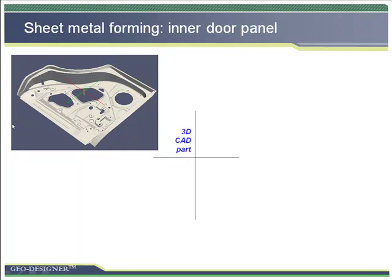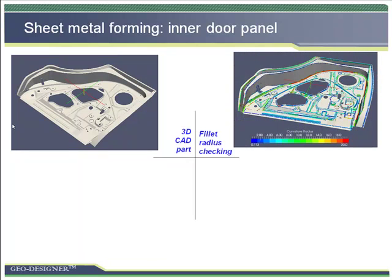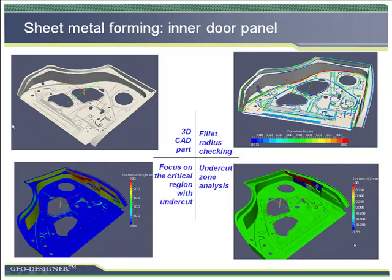Here is another example for sheet metal forming — it is an inner door panel. GeoDesigner can find the critical radius quickly and also highlight the critical undercut region. So the supplier can discuss back to the OEM company if they can make any changes in the part, then define the detail manufacturing design. Upfront analysis is usually the best way to save cost and time.